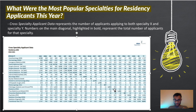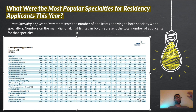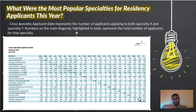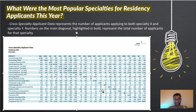Next up is pediatrics, which is pretty popular with 6,390 applicants, and then psychiatry with 4,919 applicants. You also have radiology — both diagnostic and interventional, which are very different. Diagnostic radiologists read the scans, while interventional radiologists use radiographic images to actually intervene in the body. For example, with a pulmonary embolism, an interventional radiologist would image the lungs, locate the clot, and remove it.